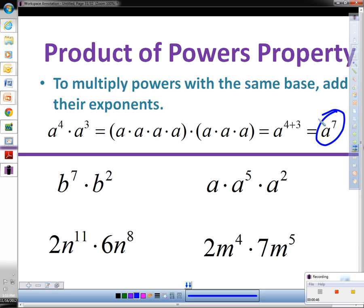So if we look down here at b to the seventh power times b to the second power, since they have the same base and it's a multiplying problem, we simplify this by leaving the base the same, b, and adding the exponent. Seven plus two is nine. So simplified, this is b to the ninth power.